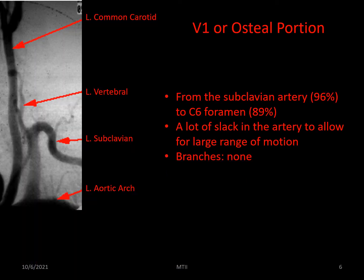The osteal portion or V1 has a lot of slack in it, as it must be able to accommodate large ranges of neck movement. It usually comes off the subclavian as the first branch and runs up in front of C7 to enter the transverse foramen of C6, where it becomes V2. There are no branches from this portion.